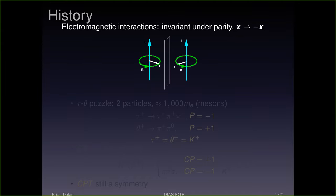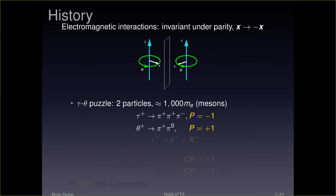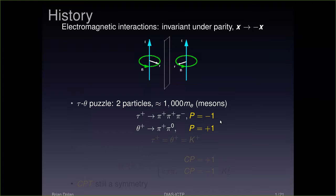Then in the 1950s, in cosmic ray physics initially, some particles were discovered that caused a problem — it was called the tau-theta puzzle. They found two particles which had the same mass and the same charge but two very different decay modes, with similar lifetimes. One decayed to three pions and the other to two pions. The intrinsic parity of a pion is negative, so a three-pion state has negative parity and a two-pion state has positive parity. These two particles had opposite parity but identical other physical properties.